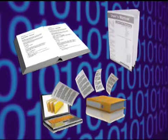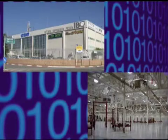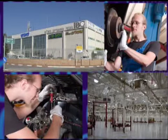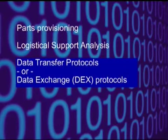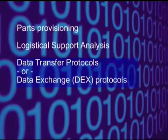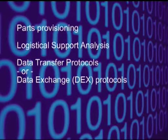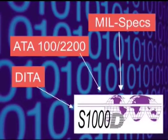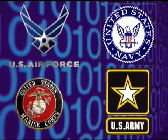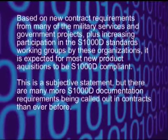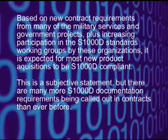S1000D is the first documentation standard that addresses the needs of both the manufacturer and end user of complex products. It is still evolving but it is very stable. New capabilities addressing the needs of parts provisioning, logistical support analysis, and data transfer protocols for moving information from smart products — that is, systems with health management features — to analysis systems are on the way. Moving from previous standards to S1000D is encouraged by many government and military agencies for new product acquisitions. The US Air Force is in the process of mandating a requirement to have all documentation provided in S1000D, and the same is happening with other joint services participants. Eventually, it is expected all new product acquisitions will need to be S1000D compliant.